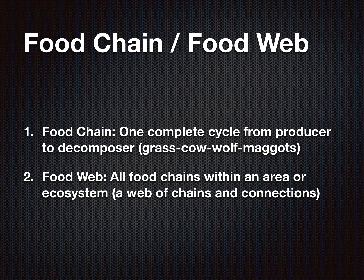Food chains and food webs — these are very simplistic definitions, not textbook authentic. A food chain is one complete cycle from producer to decomposer, meaning just one particular case, like grass eaten by a cow, the cow eaten by wolves, and the wolves decomposed by maggots. A food web differs because it's all the food chains within an area or ecosystem — within a farm, there are several food chains. The cows aren't the only thing eating the grass and the wolves aren't the only thing eating the cows. We refrain from putting humans in these equations because humans don't consume like other things consume.